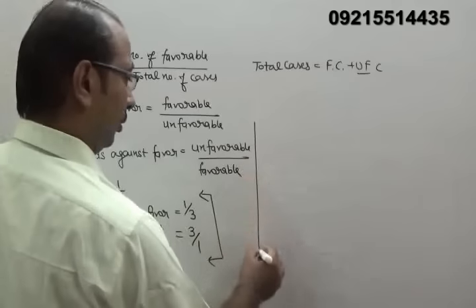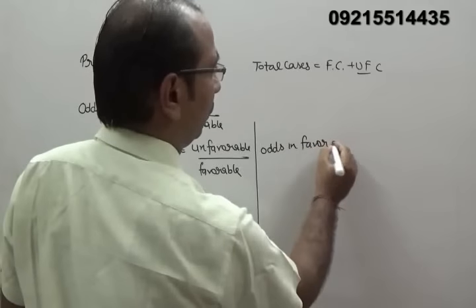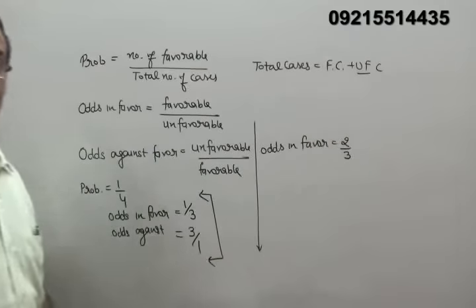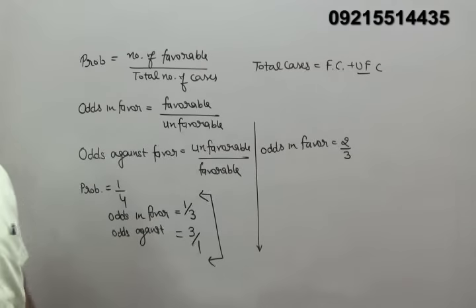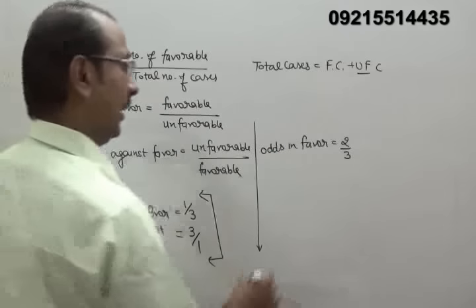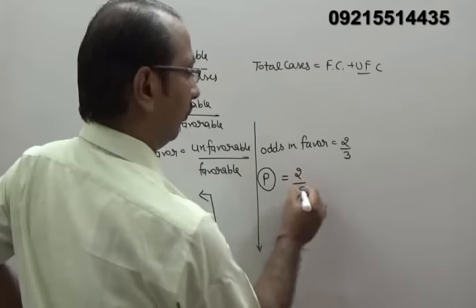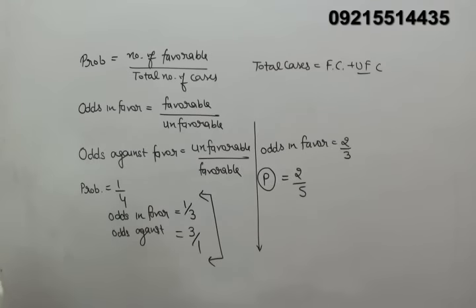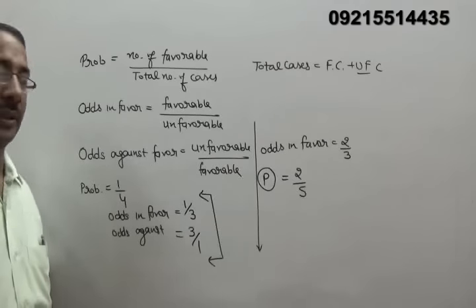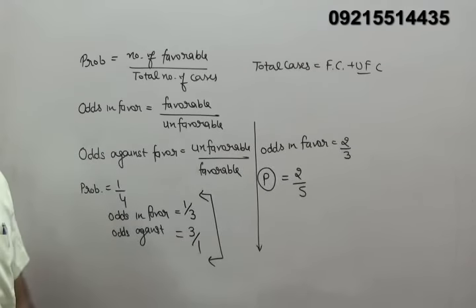Similarly, if odds in favor of an event is given as 2 upon 3, you have to find the probability. If odds in favor is 2/3, then favorable cases are 2 and unfavorable are 3, so total = 5. Therefore the probability is 2 upon 5. That is how we find probability from odds in favor.